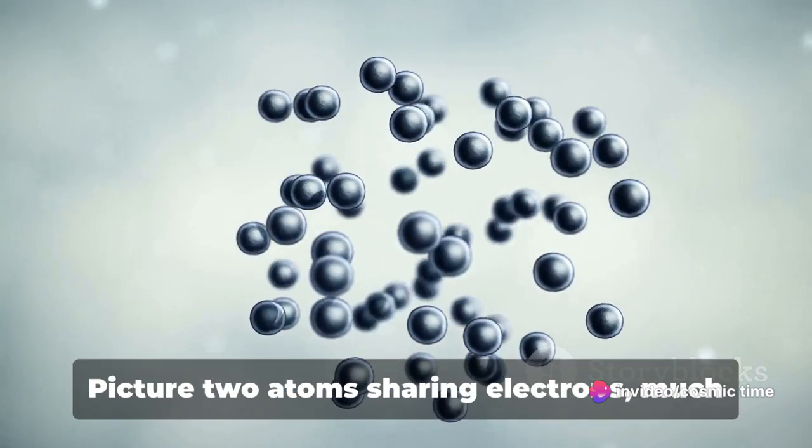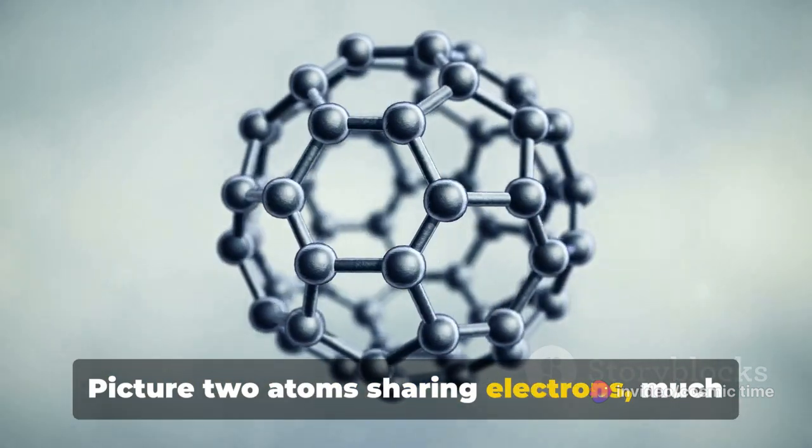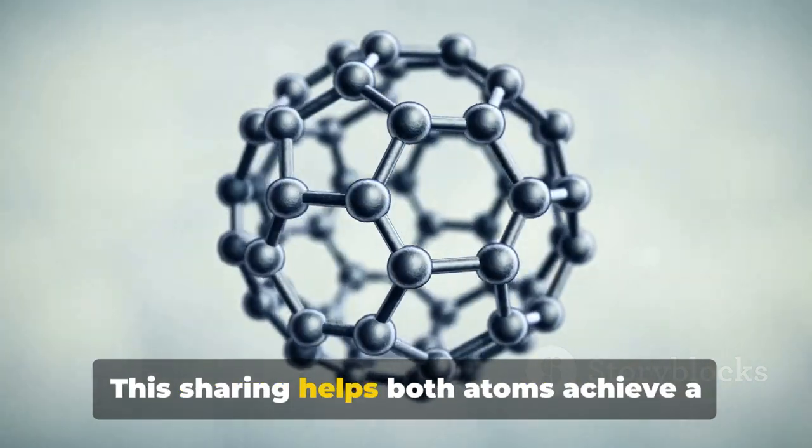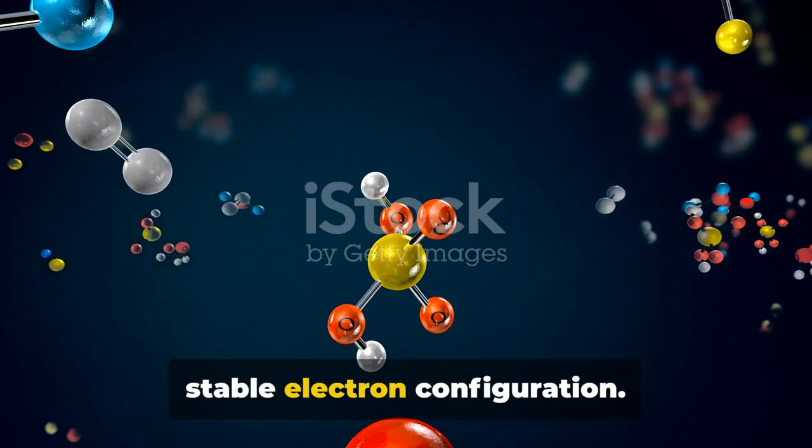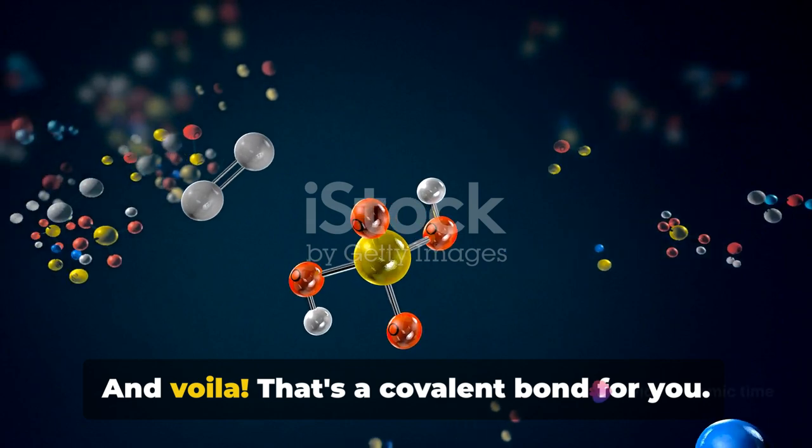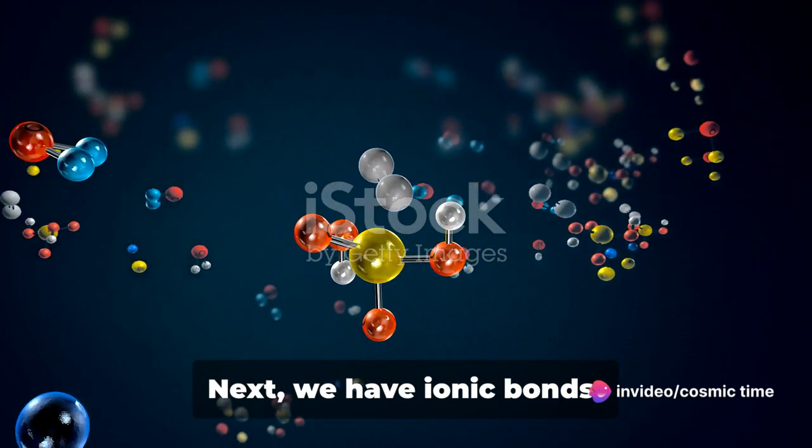First, covalent bonds. Picture two atoms sharing electrons, much like two best friends sharing secrets. This sharing helps both atoms achieve a stable electron configuration. And voila! That's a covalent bond for you.